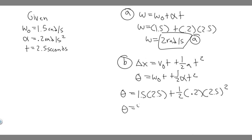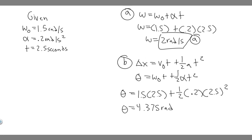When you calculate that, you get theta equals 4.375. The units are radians — radians here are analogous to meters in linear kinematics. So theta equals 4.375 radians, which is your answer to part B. And 2 radians per second was your answer to part A. Hopefully you found this useful.